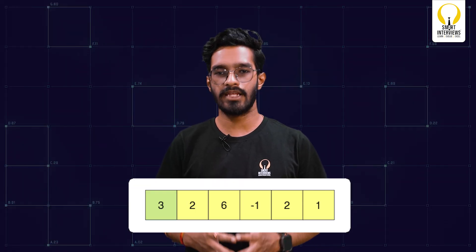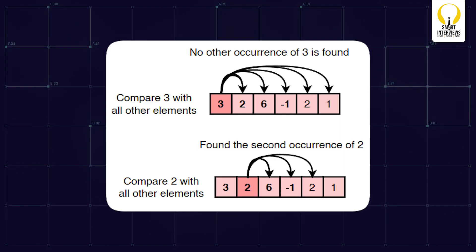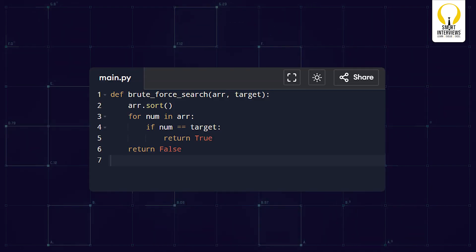Here are a few examples of brute force in coding. Let's say you are trying to find duplicates in an array — the brute force way is to compare every element with every other element. Another example: if you want to search for an element in a sorted array, you can linearly move over the array and find the element. You can find the Python code for this example on the screen.